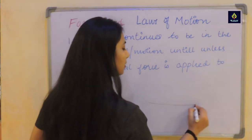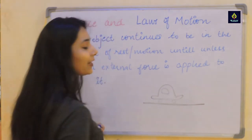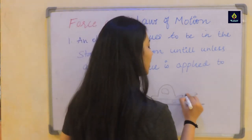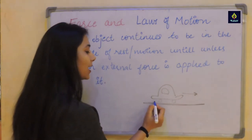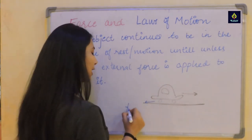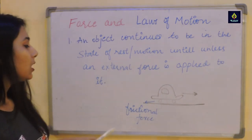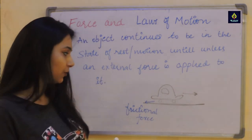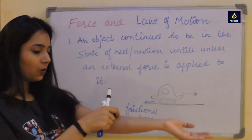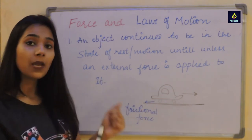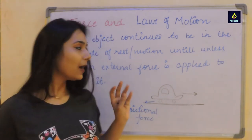Now let's take the case of a track with a car. The car is moving in this direction. Which force must be acting on it? It's a contact force acting in the opposite direction to the motion — this force is known as frictional force. So this car, which is currently in motion, will continue to remain in motion until unless an external force is applied. In this case, frictional force is the external force that stops it.